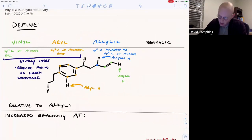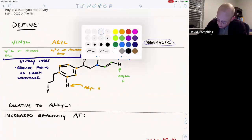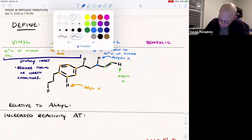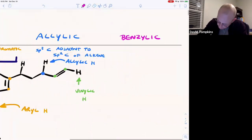So finally, benzylic also refers to an sp3 carbon, but this sp3 carbon is adjacent to the sp2 carbon of an aromatic ring, such as a benzene ring.